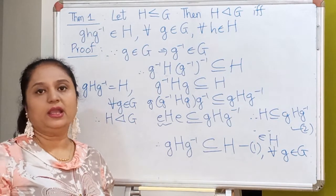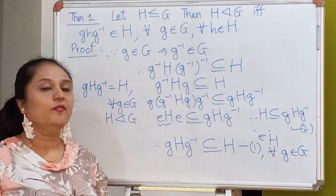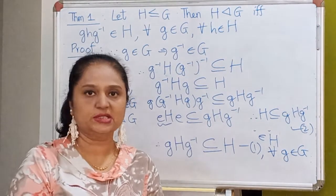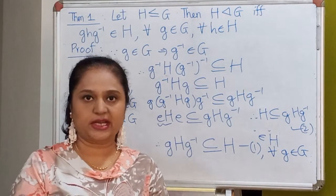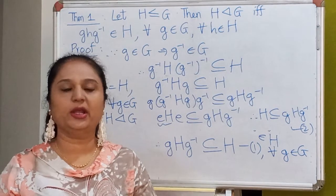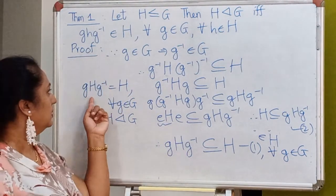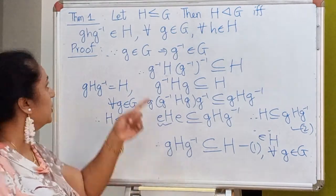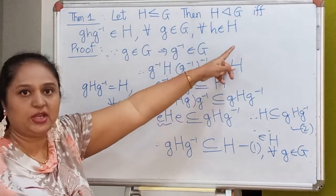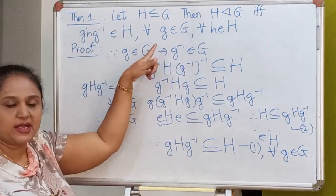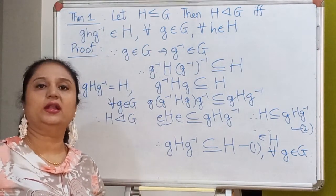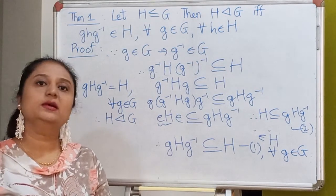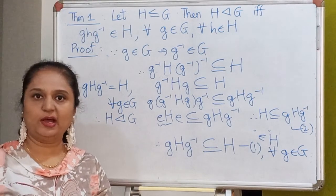This is yet another equivalent definition of a normal subgroup. So far we have three equivalent definitions: one in terms of cosets (every left coset equals the corresponding right coset), one as gHg⁻¹ = H for all g in G, and one in terms of elements (ghg⁻¹ lies inside H for all g in G, h in H). In the next lecture, we will look at some more equivalent definitions of the normal subgroup. Thank you.